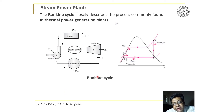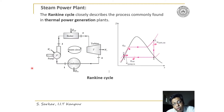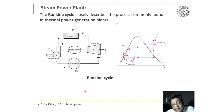As shown here in the T-S diagram — temperature and entropy diagram — process 1-2 is the pump work, 2-3 is the heat addition in the boiler, 3-4 is the turbine producing power output, and 4-1 is the heat rejection in the condenser to complete the cycle.